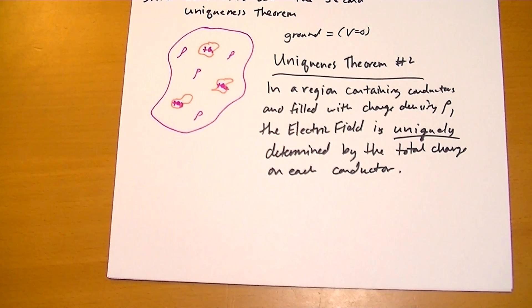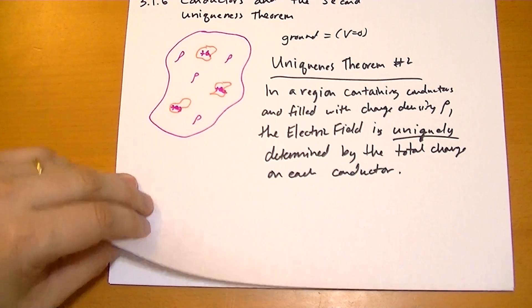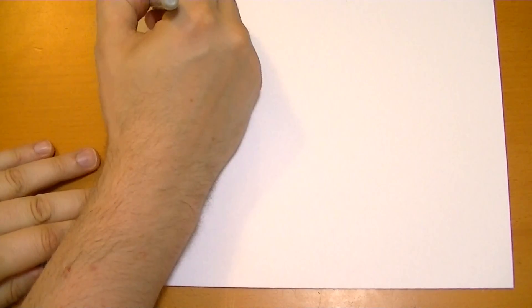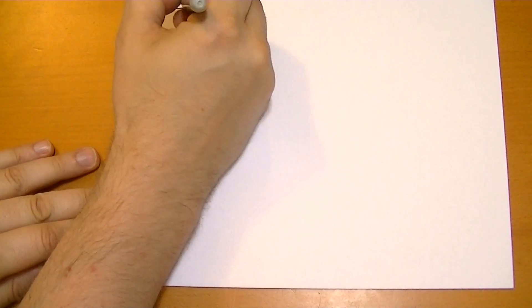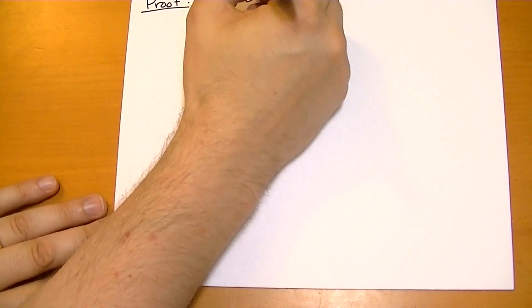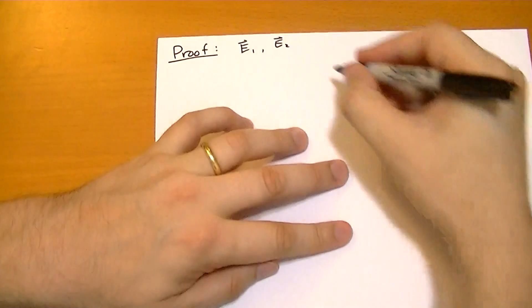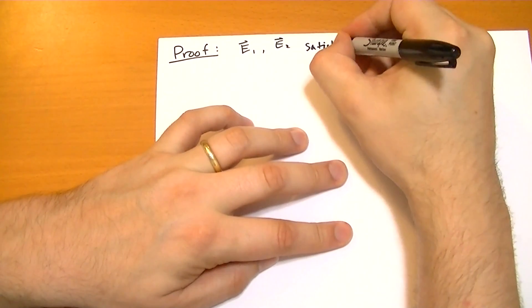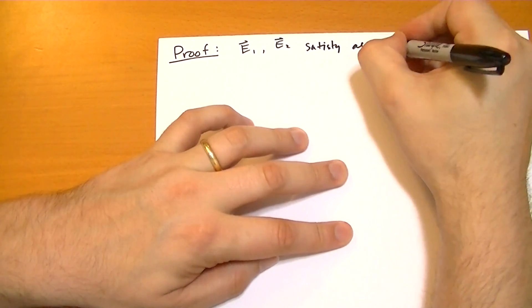So here's the proof. This is a rather involved proof, and you kind of won't see where I'm going until I've gone there, so let's start walking through the proof. It's always fun to do physics proofs. So let's say we have two electric fields. We have E-vector 1 and E-vector 2, and these all satisfy the boundary conditions.